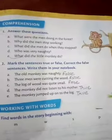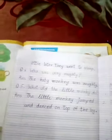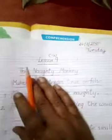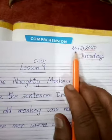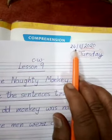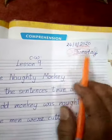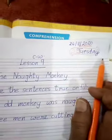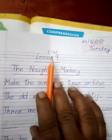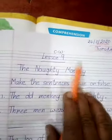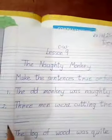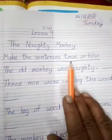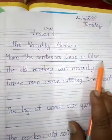Now children, take out your literature copy. First, put the date 24-11-2020, Tuesday, classwork, Lesson 9, lesson name: The Naughty Monkey. Make the sentences true and false.